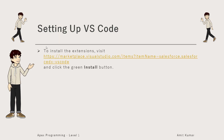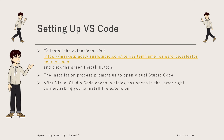To install the extension, you can visit a specific URL and click on the green install button. The installation process prompts you to open Visual Studio Code if it is not already open. After Visual Studio Code opens, a dialog box appears in the lower right corner asking you to install the extension.